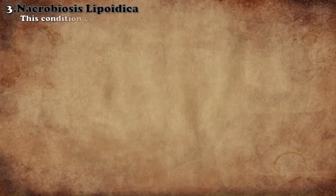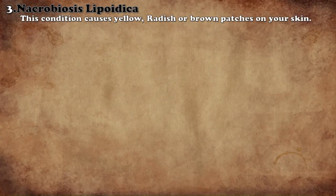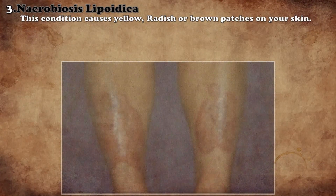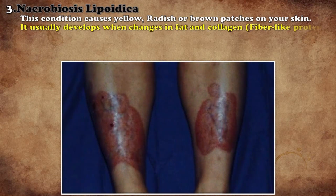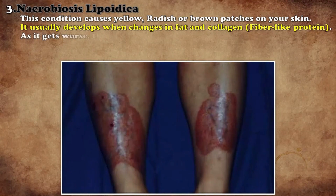Necrobiosis lipoidica usually appears as large spots that are yellow, reddish, and brown in color. Changes in fat and muscle fibers due to sugar cause this disease. Due to a high amount of sugar, spots also become swollen or sometimes the spots become hard. It can be improved by controlling sugar.